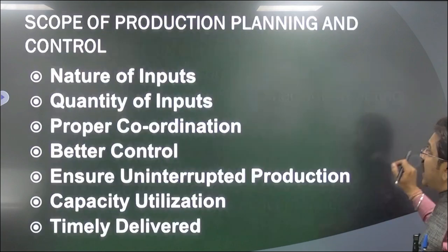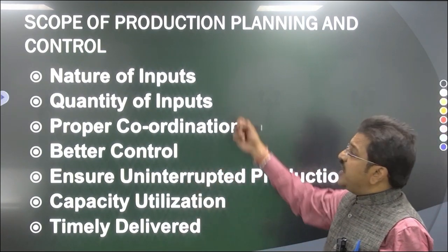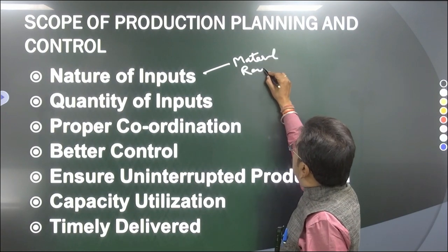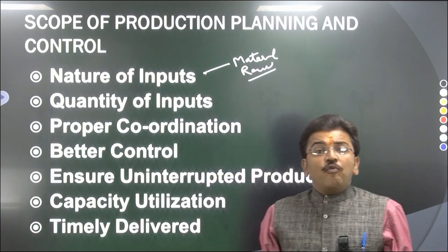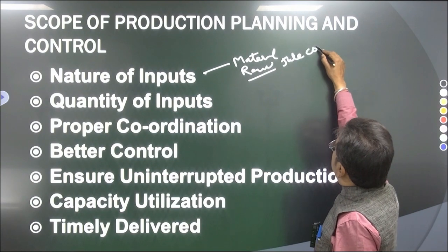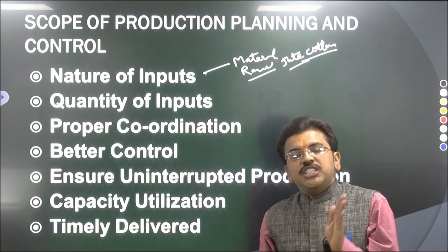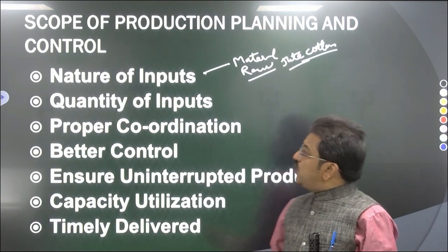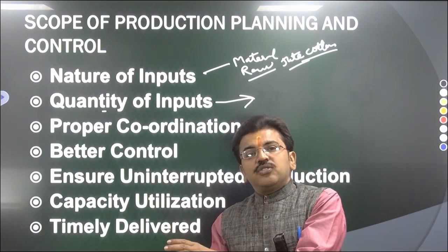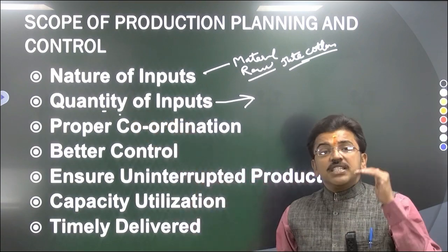Now let's look at the scope of Production Planning and Control — where it is being used. First is the nature of input, which is about the material. The first input is raw material — what type of material you are going to take. If you are manufacturing something from jute, then jute will be your raw material; if from cotton, then cotton will be your raw material. You also need to identify the machines and from where you will get them. The second scope area is quantity of input — how much raw material should be put on the machine so that proper output can be achieved.